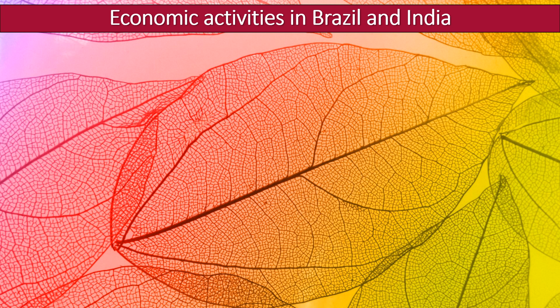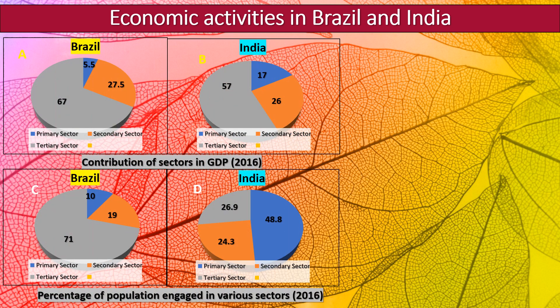Now let's look at economic activities in Brazil and India. In figure 8.2, they have given us pie charts showing the contribution of each sector in the country's GDP for the year 2016, as well as the percentage of population engaged in various activities. We need to understand this pie chart carefully and answer the questions given.